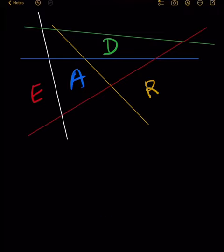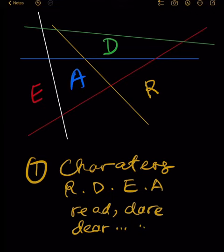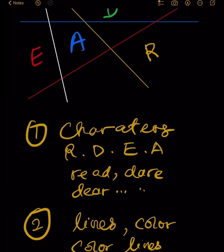There are three categories of information. First category: there are four English characters — R, E, A, D. It could be 'read', it could be 'dare', it could be 'deal' — we do not know yet. Second category: we see some lines; they could be colored lines or just lines.